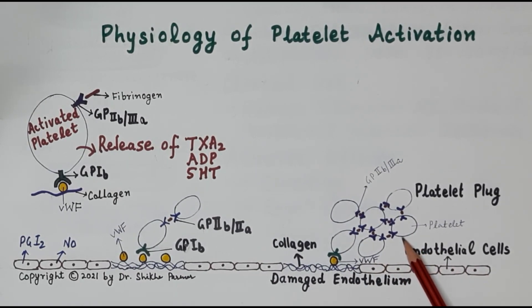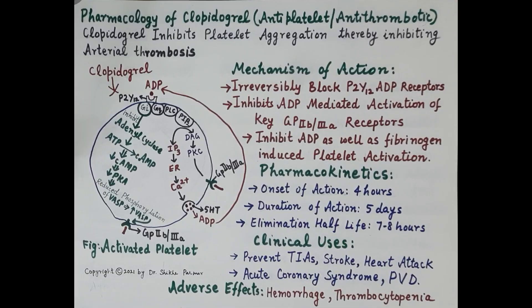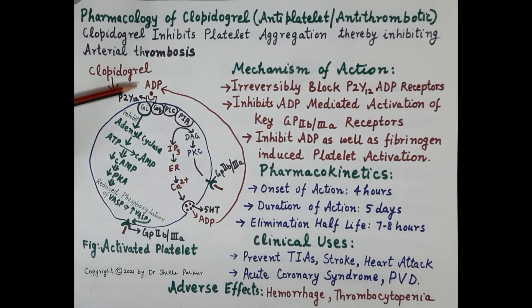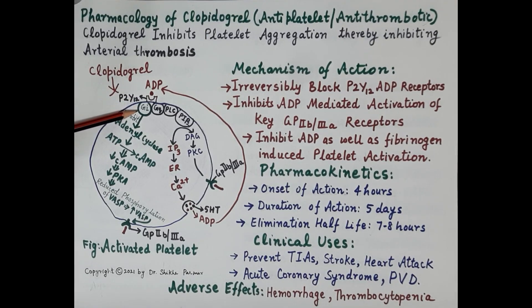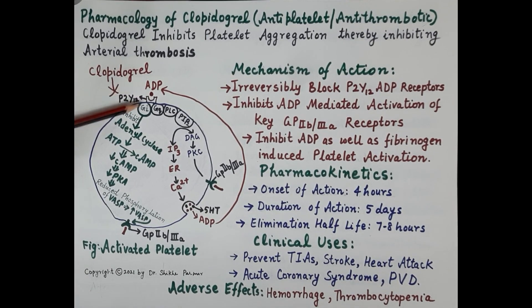This diagram of an activated platelet shows how ADP binding to its receptor causes platelet aggregation. When ADP binds to its P2Y12 receptors on the surface of the activated platelet, it stimulates G protein-coupled receptors — specifically G inhibitory proteins and Gq proteins.